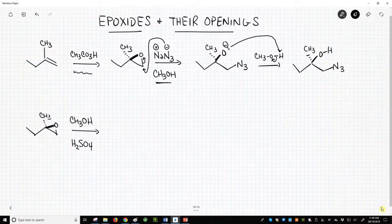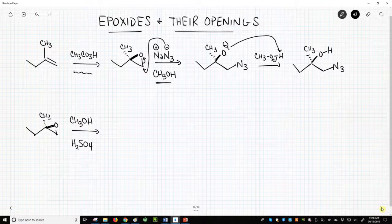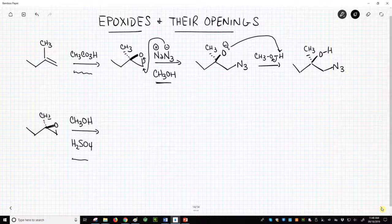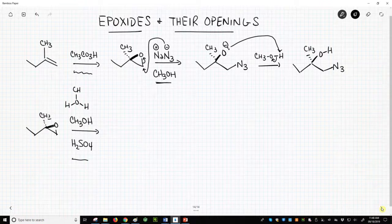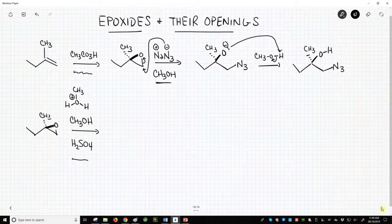Let's now open our epoxide under acidic conditions, like with methanol in sulfuric acid, H2SO4. Remember that our functioning acid under these conditions is protonated methanol, because sulfuric acid will very quickly protonate the solvent.